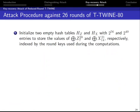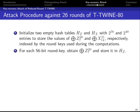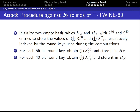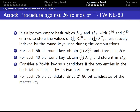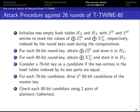Our attack against 26 rounds of T-Twine proceeds as follows. First, we initialize hash tables H_Z and H_X to store the XOR sums of Z and X. Then we guess some round keys, compute the XOR sum of Z, and store the value in H_Z. We then find the round keys that lead to the same value — these are candidate right round keys. Finally, we compute candidate master keys from the round key candidates and obtain the right master key by exhaustive search over the candidates using two pairs of plaintext and ciphertext.